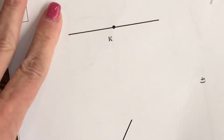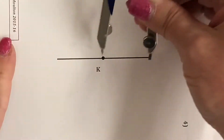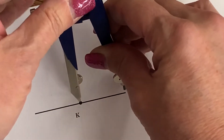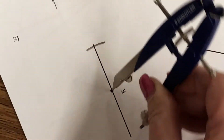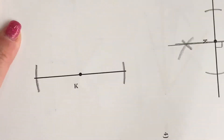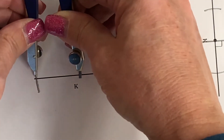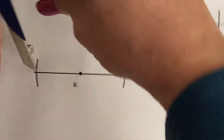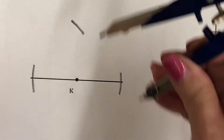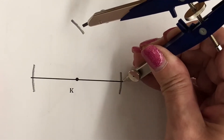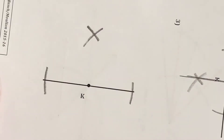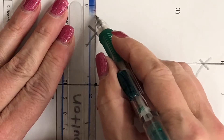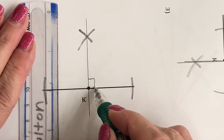Number three: once again I'm going to measure to make sure that I don't go off the paper on both sides. It's almost too big so I go just a little bit more. Then I go more than half and make my arc above. Make sure you put your symbol to show that it is perpendicular.